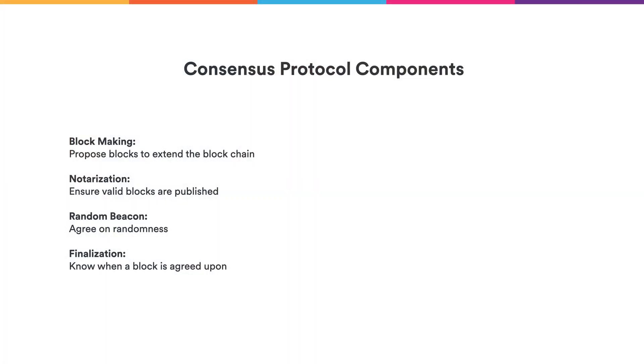It's important to note that there are many consensus protocols out there, but we chose to design our own protocol tailored to the needs of the internet computer. We're trying to optimize for throughput, latency, and protocol simplicity. Our protocol contains four main parts: block making, which creates candidate blocks; notarization, which identifies valid blocks; the random beacon, which gives us randomness to further enhance the protocol; and finalization, which tells us when we've actually reached agreement.